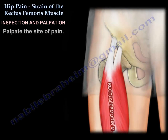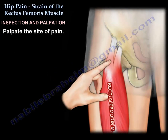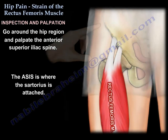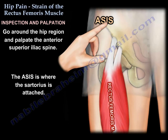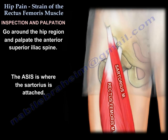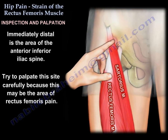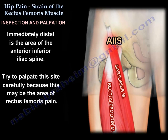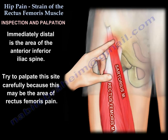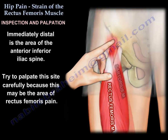Palpate the site of pain by going around the hip region. Start at the anterior superior iliac spine, where the sartorius is attached. Immediately distal to that, you find a soft spot or small groove, followed by the anterior inferior iliac spine. Palpate that site carefully, because if that area is painful, it may indicate a rectus femoris sprain.